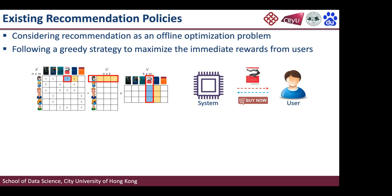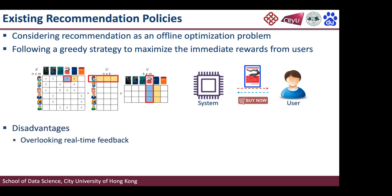Although there are many solutions, there are still some challenging problems about recommendation policies. Most recommender systems consider the recommendation procedure as an offline optimization and only focus on short-term reward. For example, when using matrix factorization, we build the user model offline and once built, it is fixed when launched online. Once we find the user may like a book, we immediately recommend it without considering long-term influence.